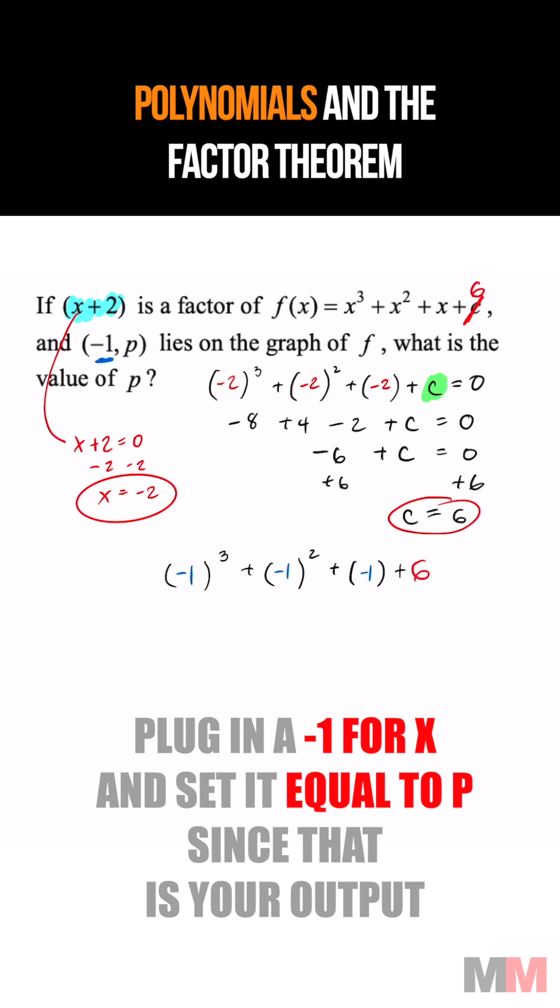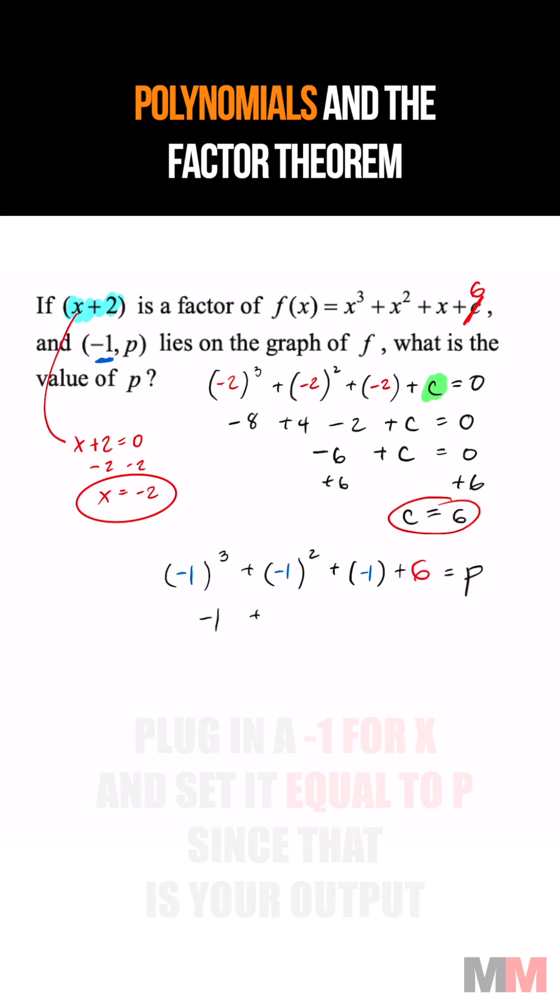Put a negative 1 in there, and we said that that's going to get me the output of p. Simplify some stuff once again, and that is going to get me 5 equals p.